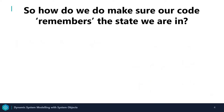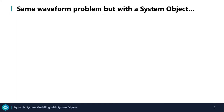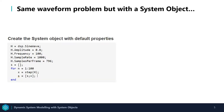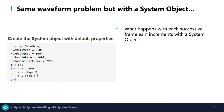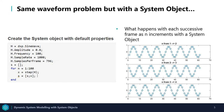So how do we make sure that our code remembers the state that we're in? Well, MATLAB has a solution and it's called system objects. Let's look at the same waveform problem but with a system object. Here is the code to create a system object with the same default properties as we had before. You'll notice that I've used the DSP sine wave system object, and in the for loop I now call the step function. You'll notice that we no longer have a phase discontinuity and our output is correct.